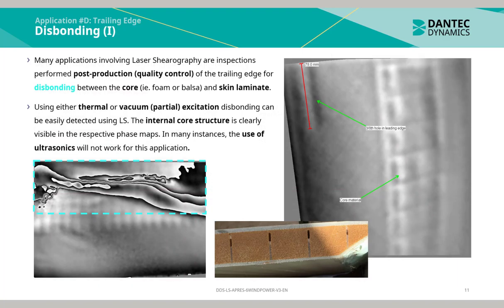Many applications involving laser shearography are inspections performed post-production in quality control of the trailing edge for disbonding between the core — i.e. foam or balsa — and the skin laminate. Using either thermal or vacuum partial excitation, disbonding can be easily detected using laser shearography. The internal core structure is clearly visible in the respective phase maps. In many instances, the use of ultrasonics will not work for this application.